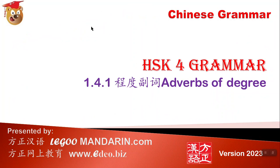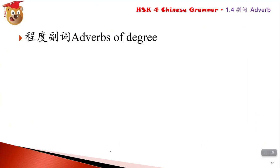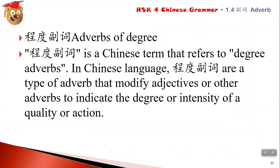In SK4, we are going to teach you something more complicated. The first category is 程度副词 - degrees and levels. 程度副词 is used to modify an adjective or other adverb to indicate the degree or intensity of a quality or action.